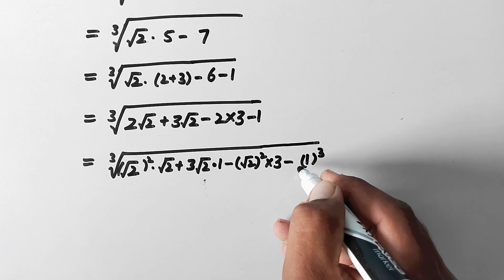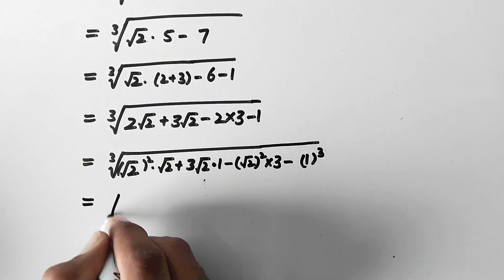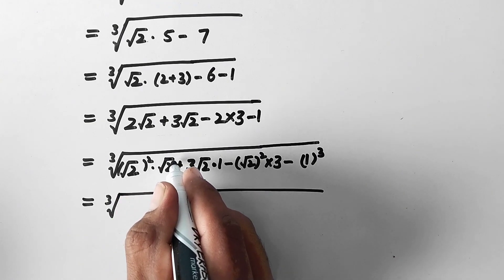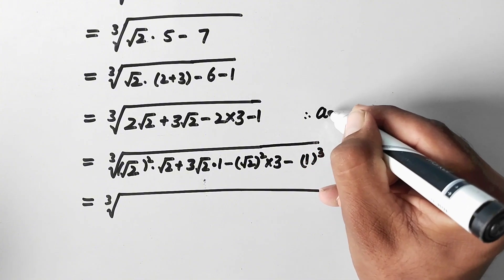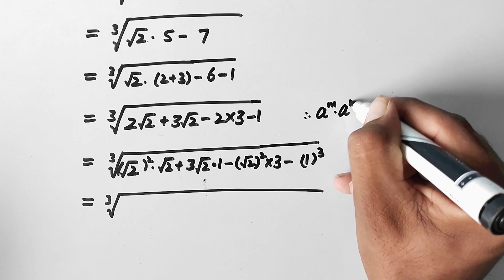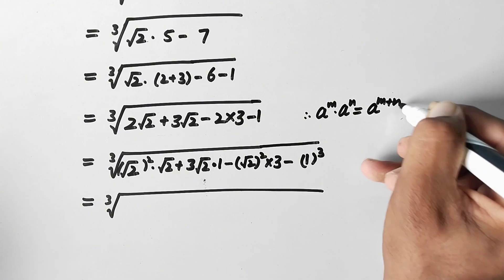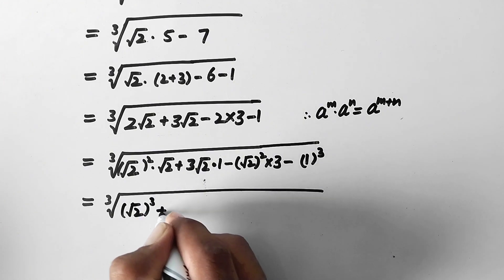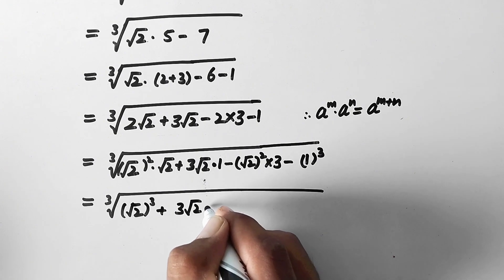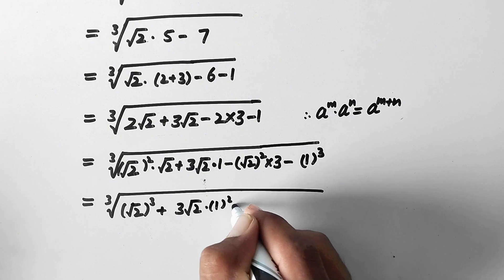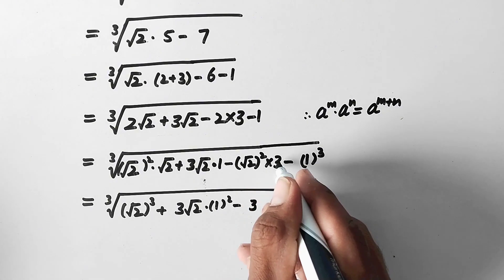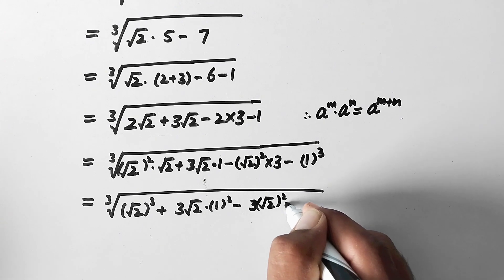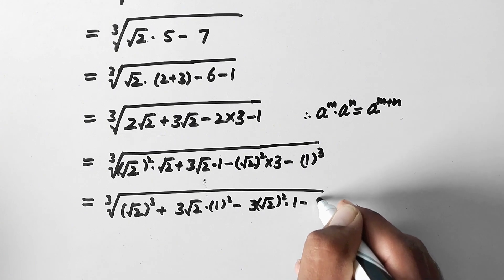And now here, cube root of: this square root 2 squared times square root 2 to power 1. As we know that a to the power m times a to the power n equals a to the power m plus n. So here it will be square root 2 to the power 3, plus 3 times square root 2 times 1 squared, minus 3 times square root 2 squared multiplied by 1, and minus 1 cubed.